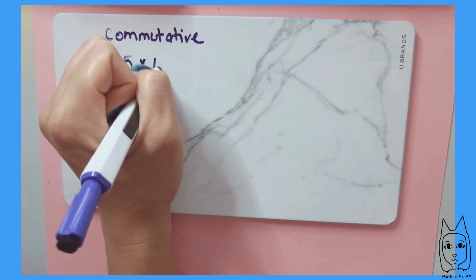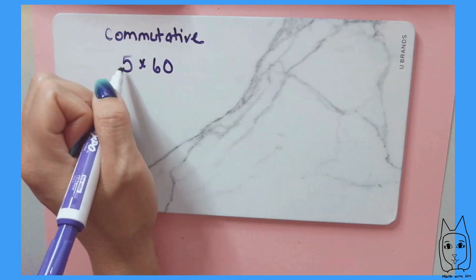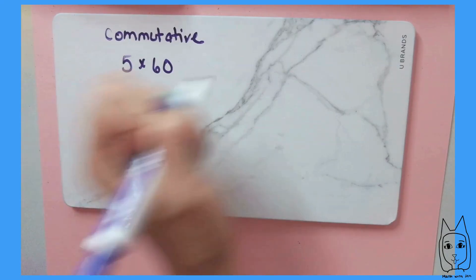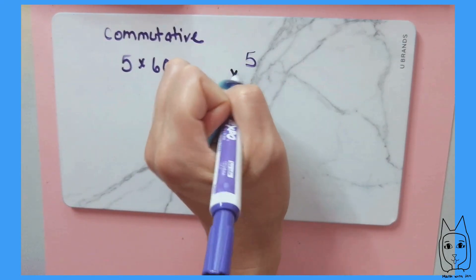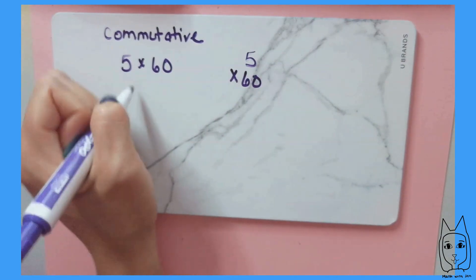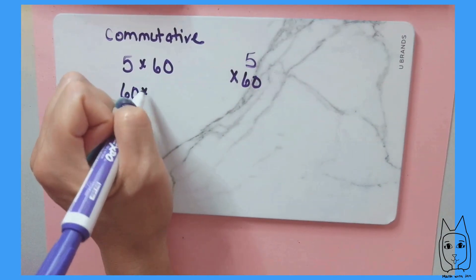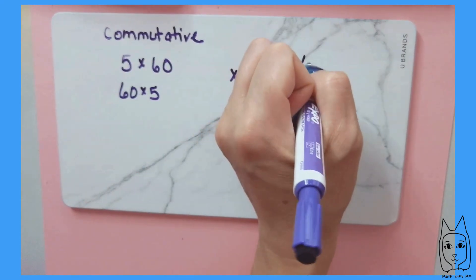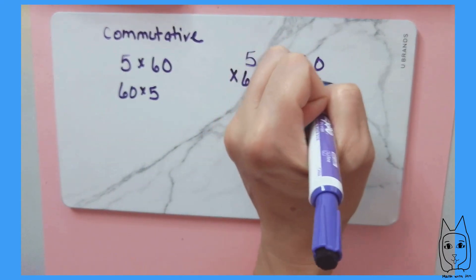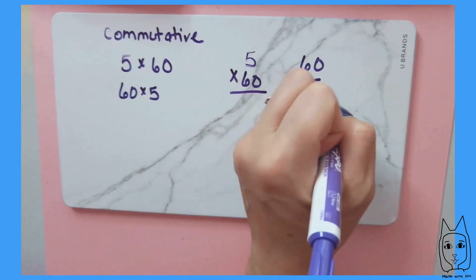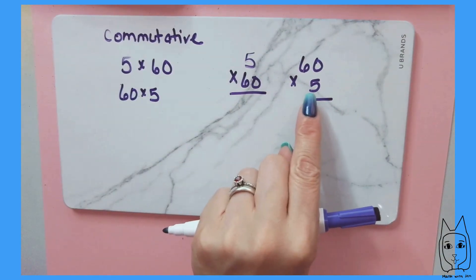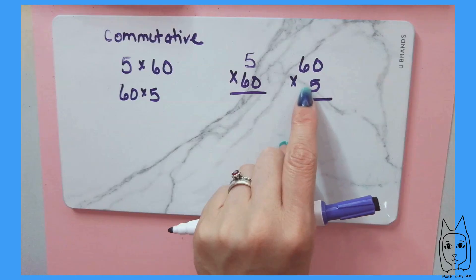So if I'm doing 5 times 60, I can leave it like this. I can say okay, I'm going to do 5 times 60, or I could do 60 times 5, and I could write it like this: 60 times 5. Either way is correct.